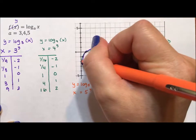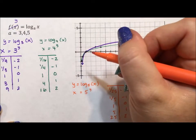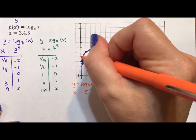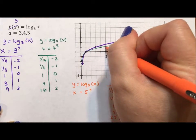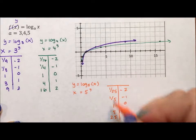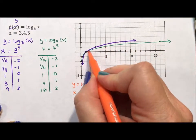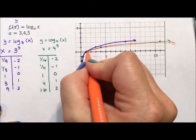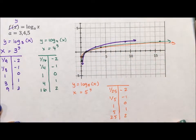So 1 over 25, negative 2, closer to the y-axis, 1 fifth negative 1, closer to the y-axis, same point, 5, 1, closer to the x-axis, and 25 is not even on here, so we're going to be lower than the green line here, and to the left of the green line here. And there you have it.